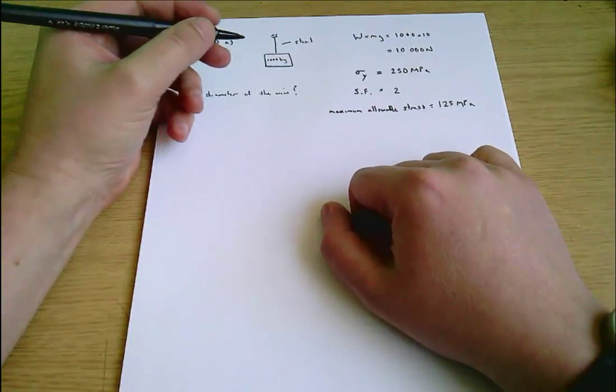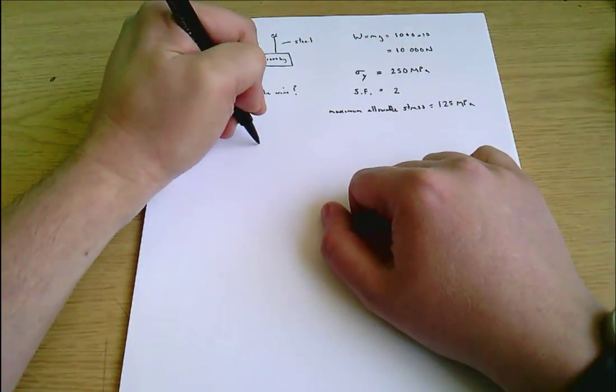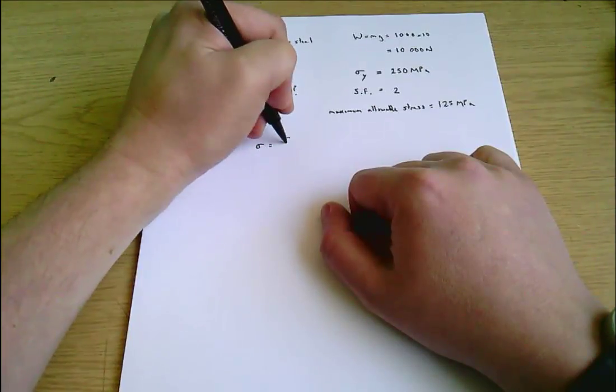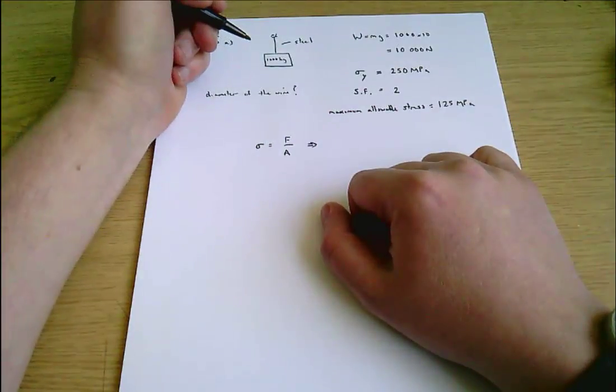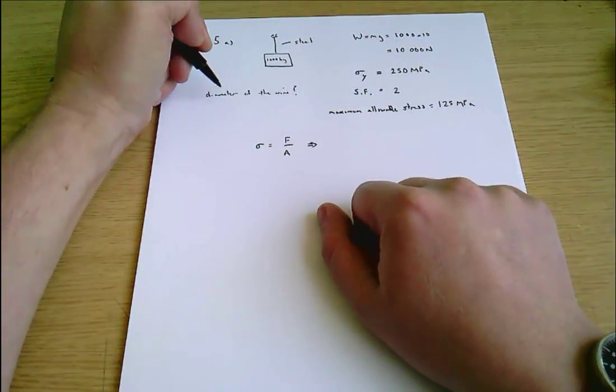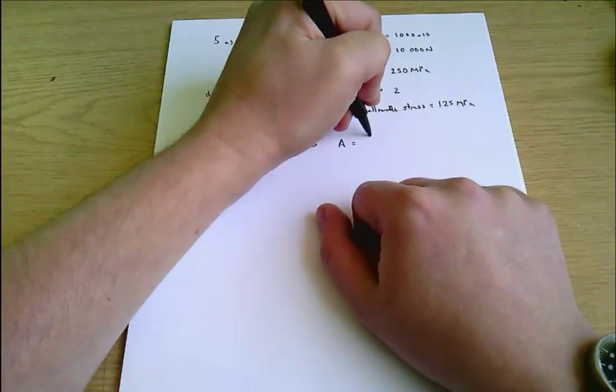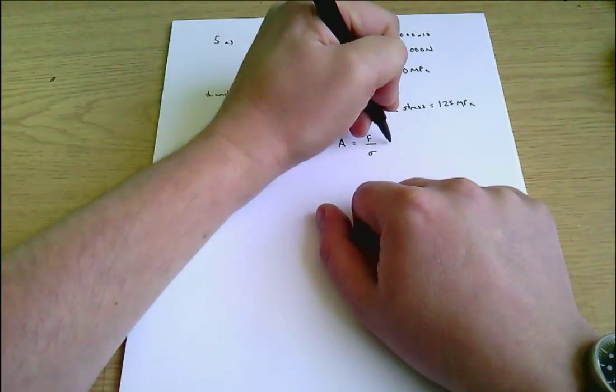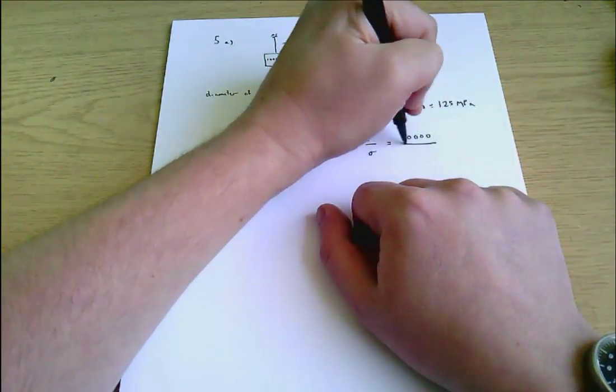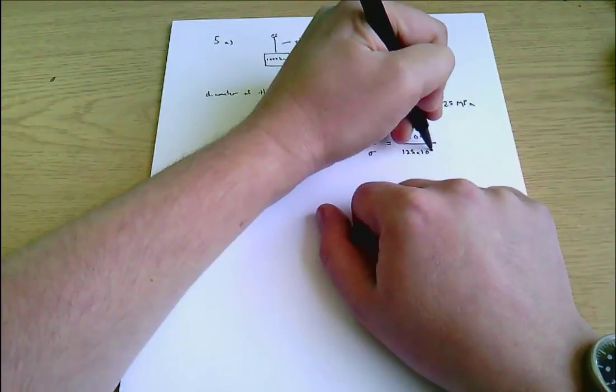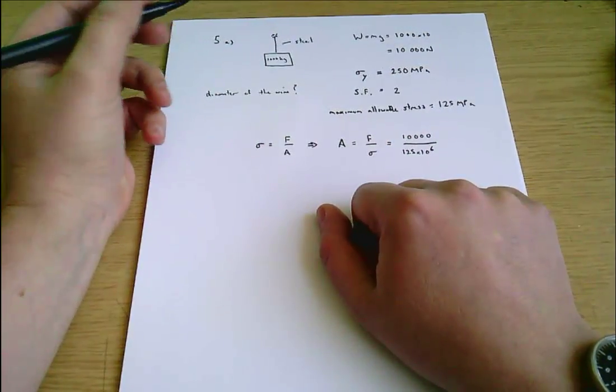Okay so we're aiming for a stress of 125 megapascals. To do this we need to know the definition of stress. Sigma the stress equals force over area and therefore we want to calculate an area because that will get us towards a diameter. Area is going to be F over sigma which equals 10,000 divided by 125 times 10 to the 6, noting that we're targeting this stress of 125 megapascals.